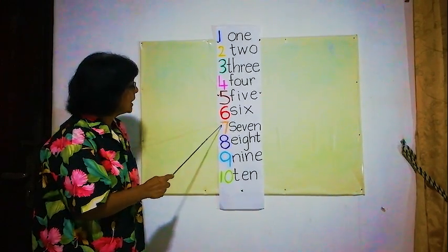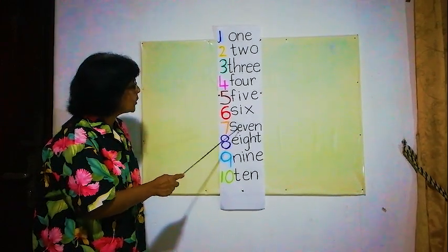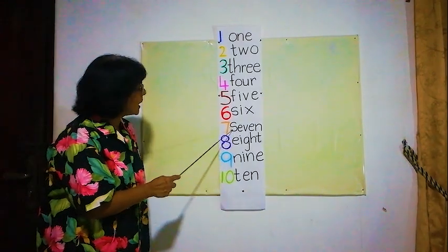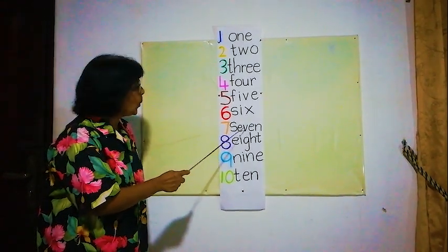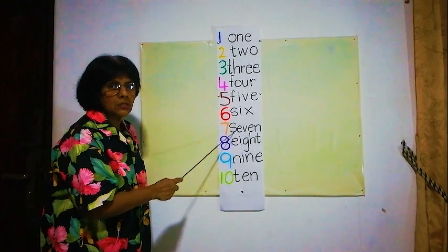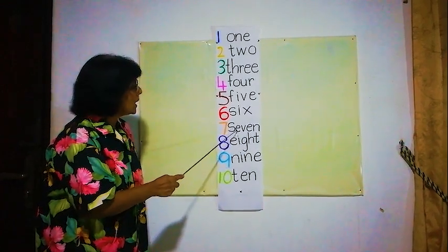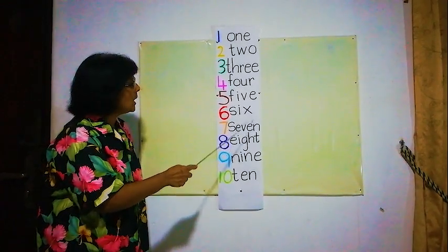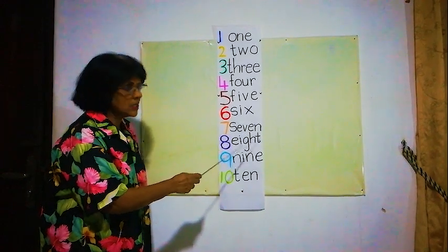Number 7. Here 7. How do you spell 7? S, E, V, E, N, 7. S, E, V, E, N, 7.